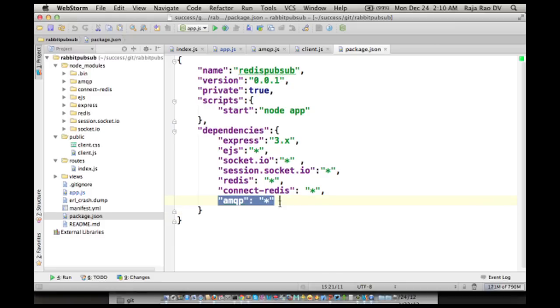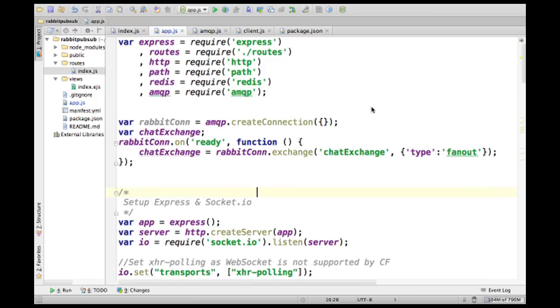First, I've added the amqp module to package.json. What I have done here is create a connection to our RabbitMQ server. Notice that I am passing an empty object, which means to use a default connection to RabbitMQ. Once we get the connection, I am creating an exchange by name 'chatExchange'. Because this is a simple pub-sub, we can create an exchange with a unique name and ask all the consumers to simply connect directly to this chat exchange. I'm saying the type of the exchange is fanout. Fanout means send anything that comes to the exchange to all the consumers.